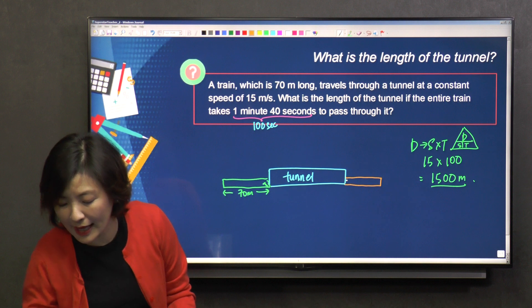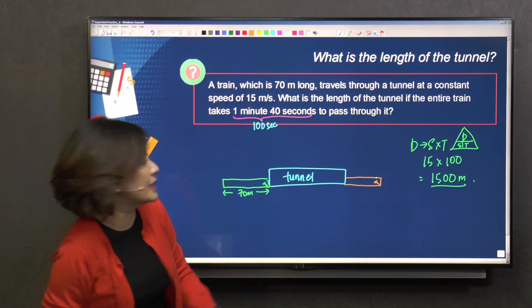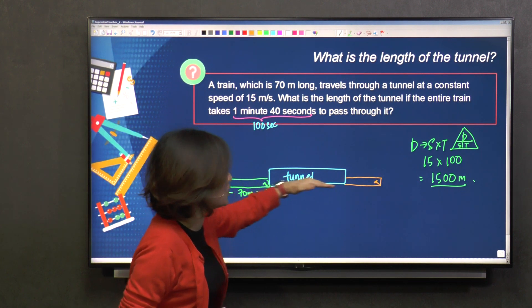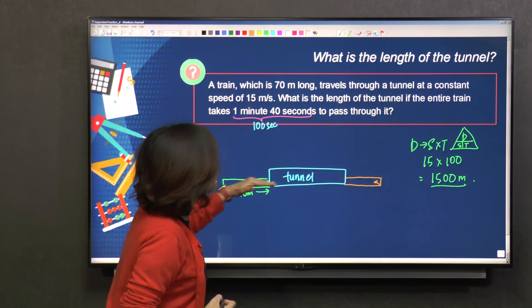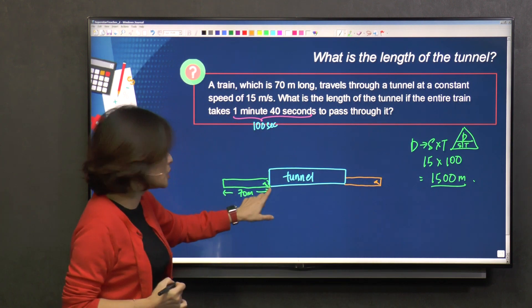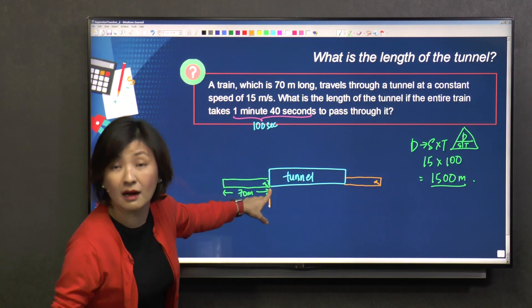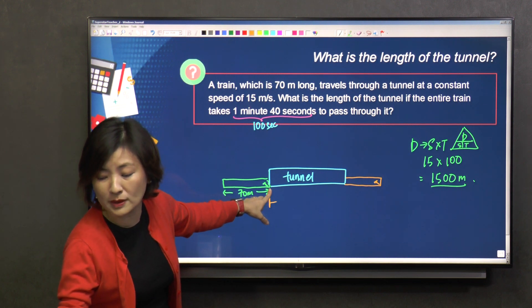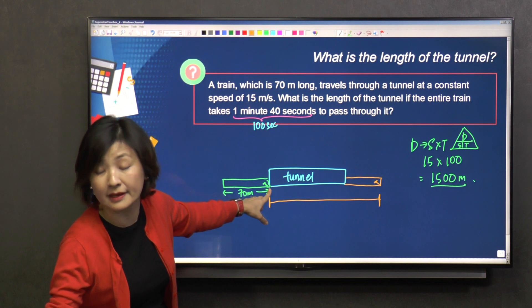You come here. And then this is still the driver. The driver is not on this side. The train goes this way. Driver doesn't change seat. So it goes out this way. So it starts from here, and then you only stop counting here. You understand?